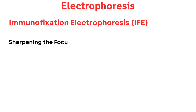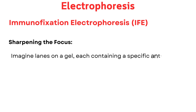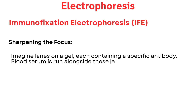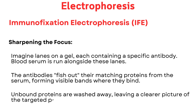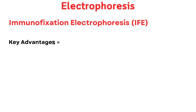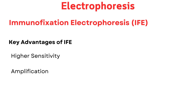Imagine lanes on a gel, each containing a specific antibody. Blood serum is run alongside these lanes; the antibodies fish out their matching proteins from the serum, forming visible bands where they bind. Unbound proteins are washed away, leaving a clearer picture of the targeted proteins. Key advantage: IFE has a lower background signal compared to SPE, allowing detection of even small amounts of abnormal proteins (paraproteins). When antibodies bind to their target proteins, it creates a larger immune complex, making the band easier to visualize.